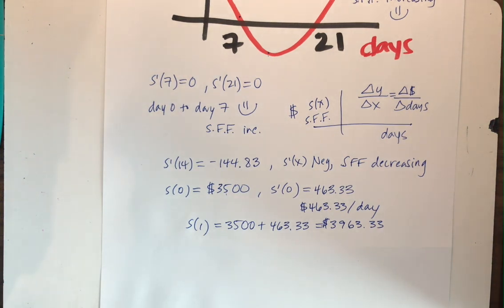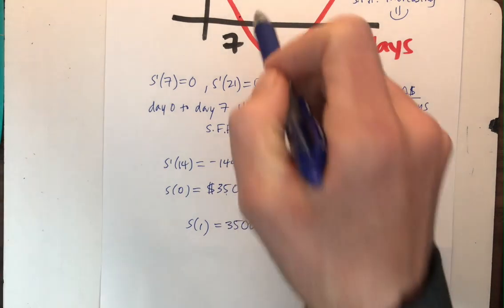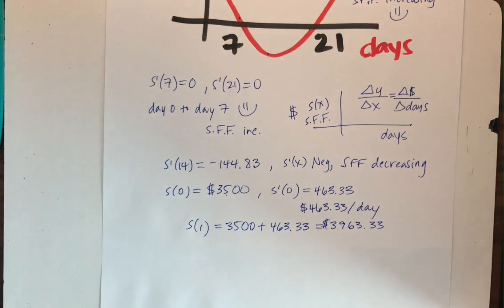And then getting to letter D. Are there days in which the Sarah Fisher fund does not change? Well, where is the rate of change not changing? Where is it zero? Boom and boom. So the seven in the 21st day. The rate of change is zero, meaning the Sarah Fisher fund is not changing.